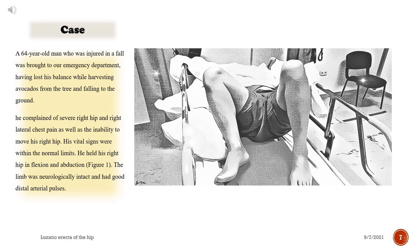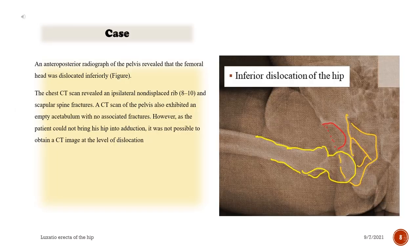His vital signs were within normal limits. He held his right hip in flexion and abduction. The limb was neurologically intact with good distal arterial pulses. An anteroposterior radiograph of the pelvis revealed that the femoral head was dislocated inferiorly. Chest CT scan revealed an ipsilateral non-displaced rib fracture (ribs 8–10) and scapular spine fractures. A CT scan of the pelvis exhibited an empty acetabulum with no associated fractures; however, as the patient could not bring his hip into adduction, it was not possible to obtain a CT image at the level of dislocation.